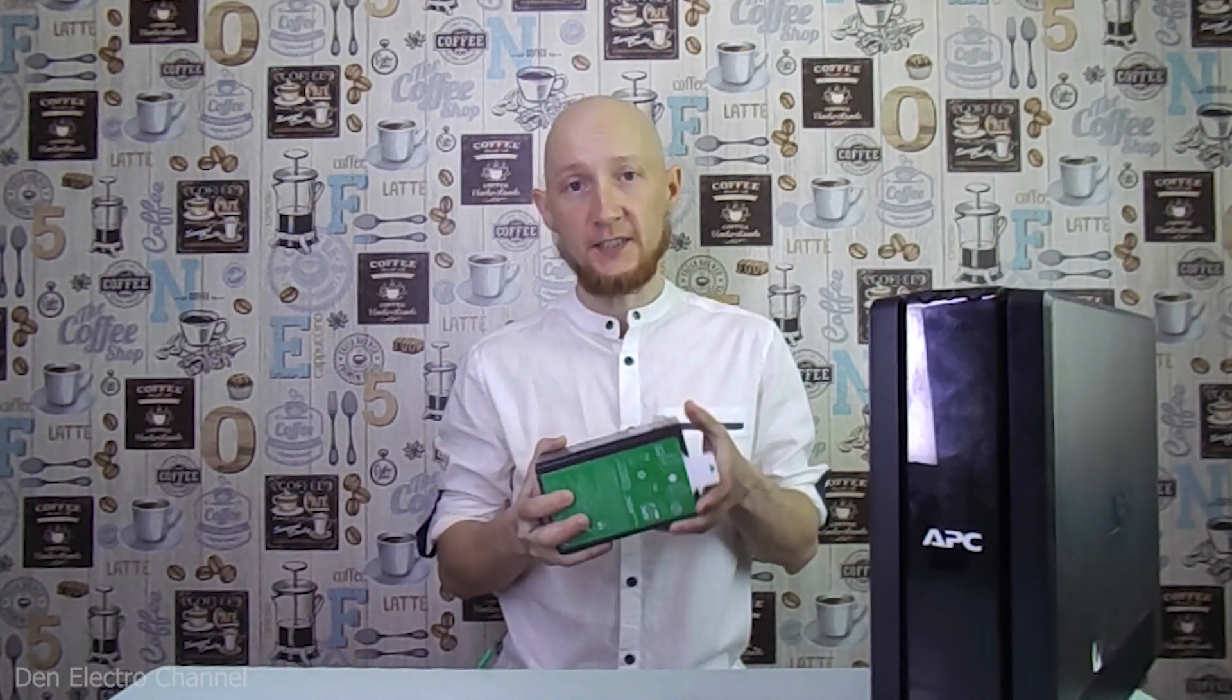Here two 12 volt 7 ampere hour batteries were used. They were connected in series, resulting in a 24 volt 7 amp hour battery. Just like in my UPS, we decided to put lithium iron phosphate instead of lead acid. Now the battery capacity will not be 7 ampere hours, but 15, more than twice.